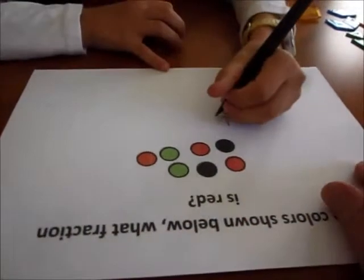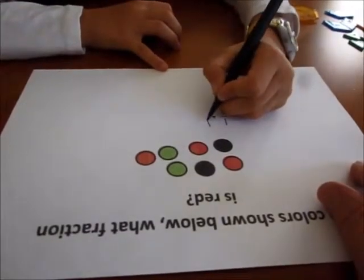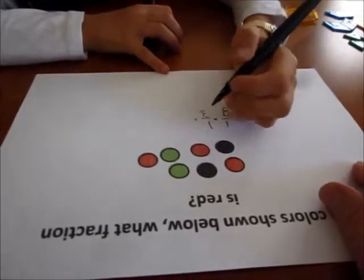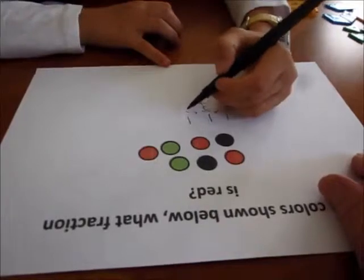Plus what's the fraction of the colors that are black? One-third. And what's the fraction of the colors that are green? One-third. And all together,